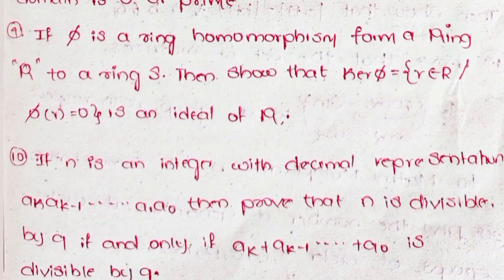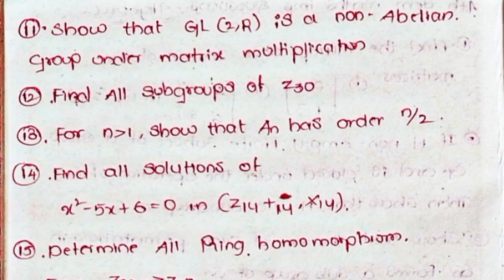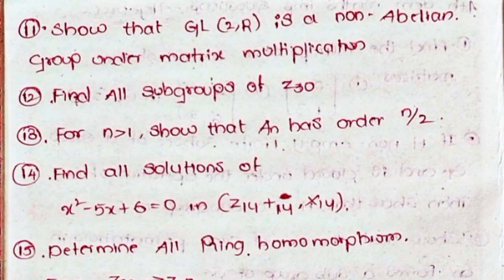Tenth, if N is an integer with decimal representation a_k, a_{k-1}, ..., a_1, a_0, then prove that N is divisible by 9 if and only if a_k + a_{k-1} + ... + a_0 is divisible by 9. Eleventh, show that GL(2, R) is a non-Abelian group under matrix multiplication.